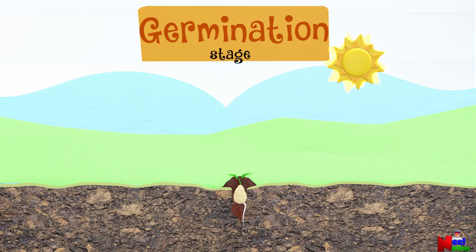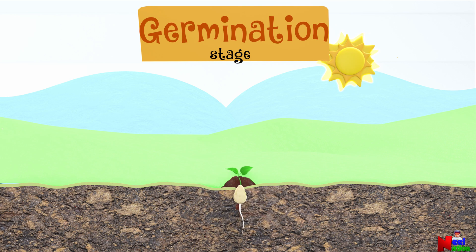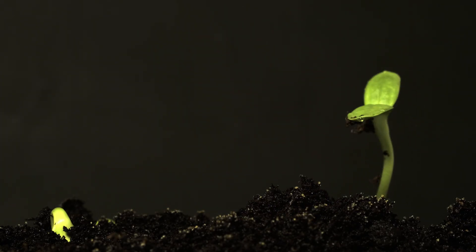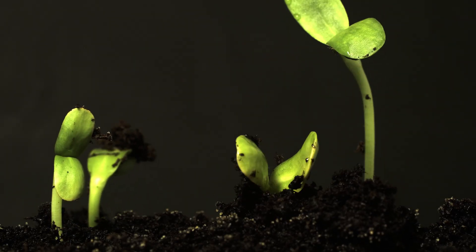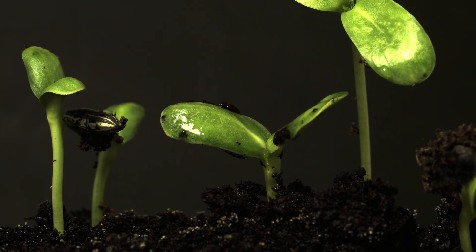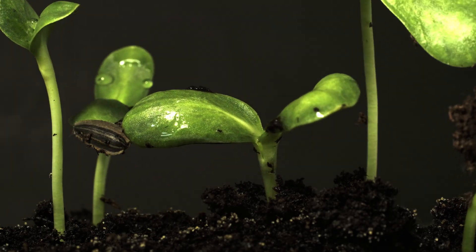It's like the plant's way of saying, 'I am ready to grow!' Finally, the shoot bursts out of the seed and emerges from the soil. The shoot becomes a seedling and tiny leaves start to unfold. Germination is an exciting stage when the seed transforms into a tiny little seedling.